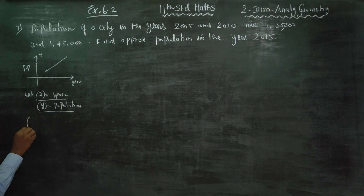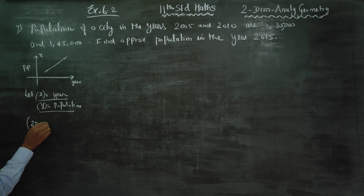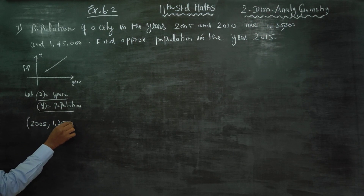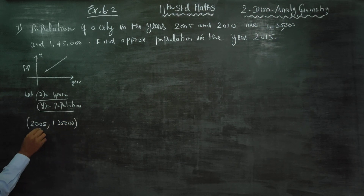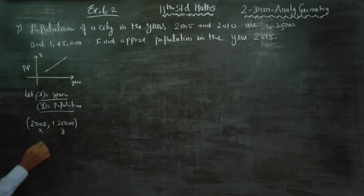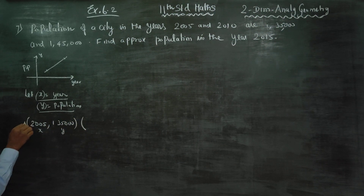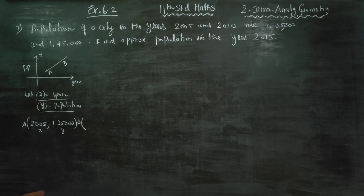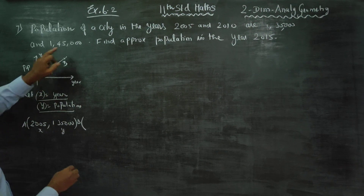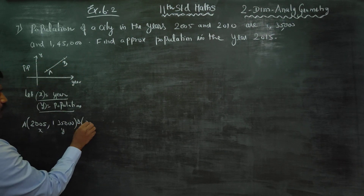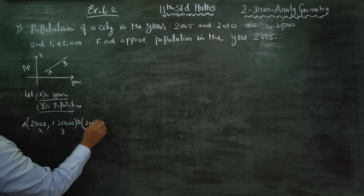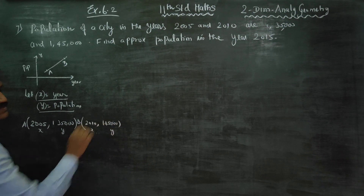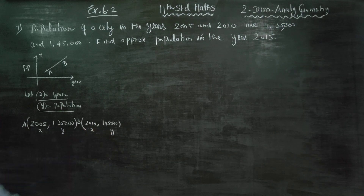First point: I choose the year 2005, population is 1,35,000 — this is the x-coordinate and y-coordinate, call it point A. Another point: year 2010, population is 1,45,000 — this is point B. So this is my x-axis and this is my y-axis, with x-coordinate and y-coordinate defined.